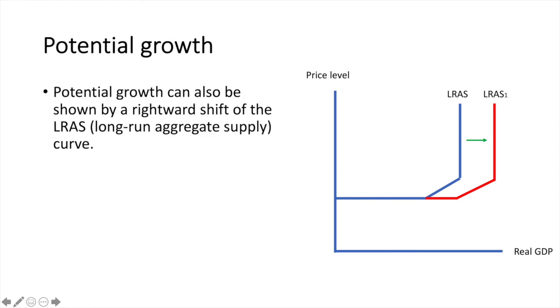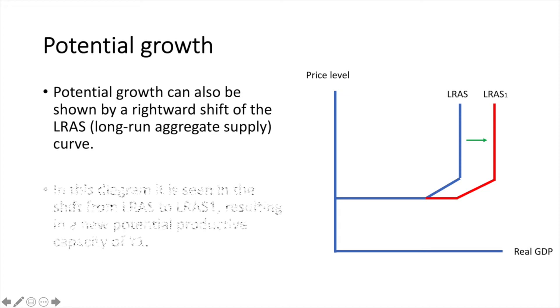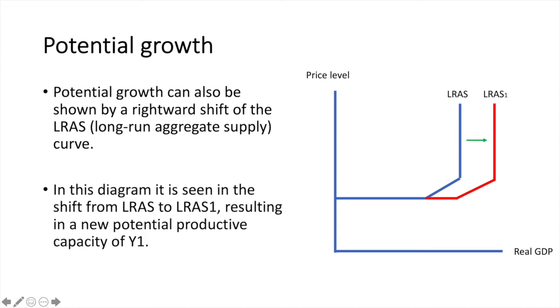Potential growth can also be shown by a rightward shift of the LRAS, or long-run aggregate supply curve. In this diagram, it is seen in the shift from LRAS to LRAS1, resulting in a new potential productive capacity of Y1.